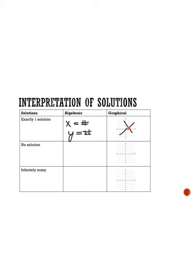For no solution, what we end up getting is something like 0 equals 3, which is definitely not true. Since 0 does not equal 3, we don't have a solution — that's the algebraic way. Graphically, what we would see is lines that are parallel, meaning they are never going to intersect, so they do not have a solution. For infinitely many solutions, if we solve all the way down, we get 0 equals 0. That tells us these equations are always going to be exactly the same. Graphically, if you graph the two lines, the second line is right on top of the first — they are, in fact, the same line, which means infinitely many solutions.